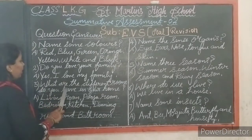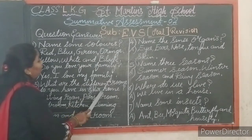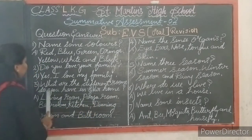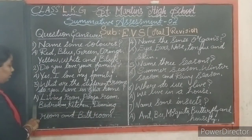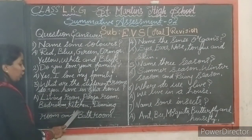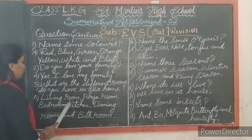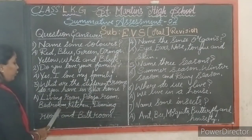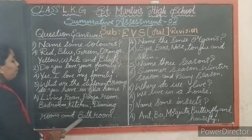Third question: what are the different rooms do you have in your home? Answer — living room, puja room, bedroom, kitchen, dining room and bathroom. Shall we say once again children? Living room, puja room, bedroom, kitchen, dining room and bathroom.